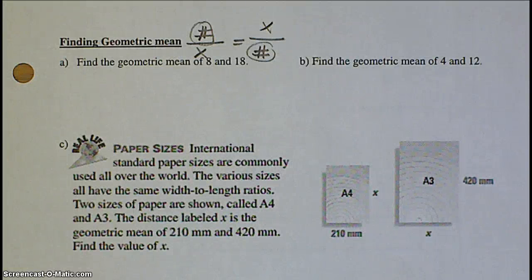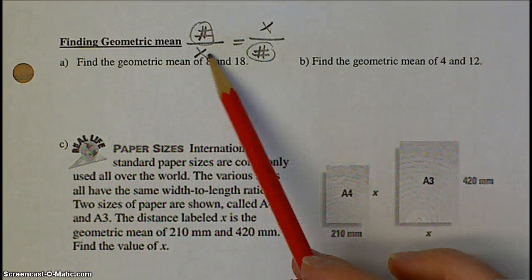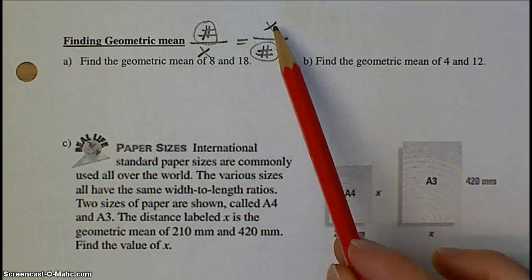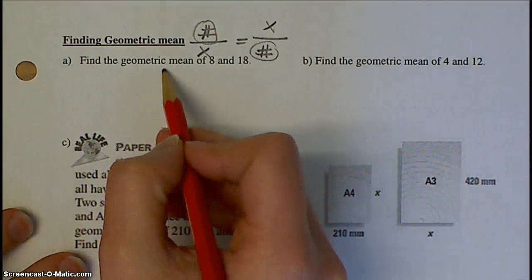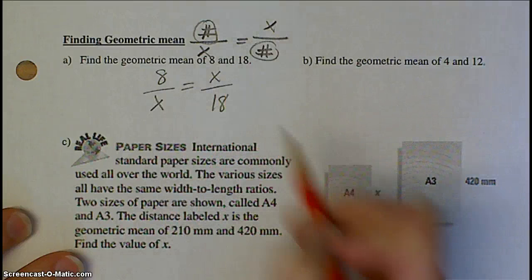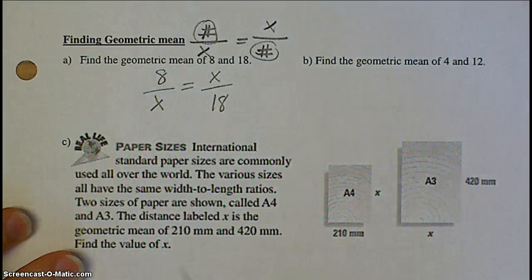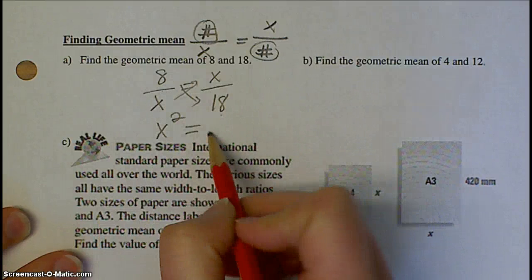Finding geometric mean. Geometric mean is when you set up a proportion such that two of the cross products will be X. So X times X. The other two numbers are the numbers that you're trying to find the geometric mean of. So in this case, part A, it says find the geometric mean of 8 and 18. You're going to set up your proportion. 8 to X will be equivalent to the ratio X to 18. And then you do your cross products. So you will always get X squared. 8 times 18 is 144.